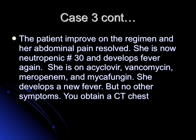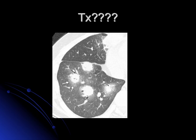Continuing the case: the abdominal pain resolved and the patient is now neutropenic for 30 days. She develops fevers again on acyclovir, vancomycin, meropenem, and micafungin. CT is obtained as part of the workup — remember in neutropenic fever to get blood cultures, urine cultures, sputum if possible, and CT may be better for picking up lesions not obvious on x-ray. The CT shows a halo sign — a necrotic area in the middle surrounded by ground-glass inflammation — most characteristic of Aspergillus, though other molds can cause it.